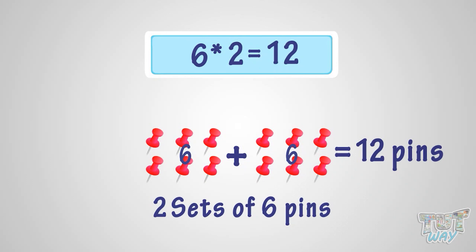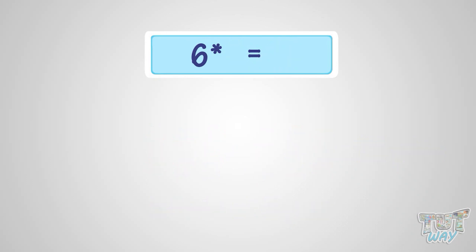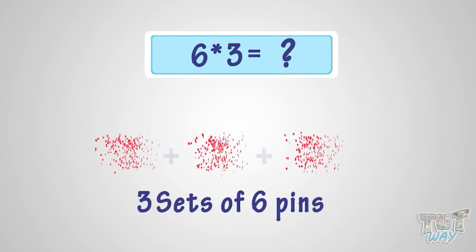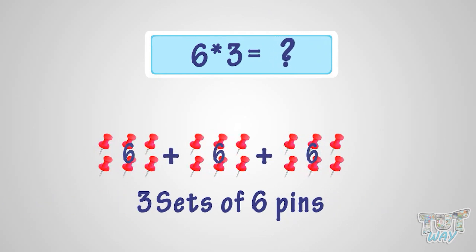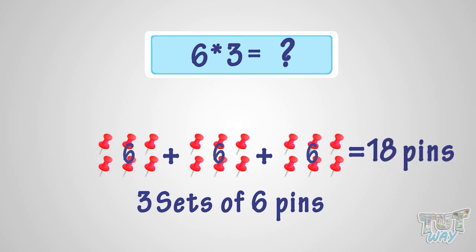What is six multiplied with three? It is the same as three sets of six pins. So it is eighteen pins. That is, six multiplied by three is eighteen.